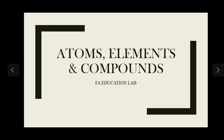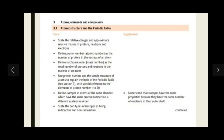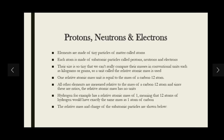Here is the CIE IGCSE Chemistry syllabus. We are going to discuss the first three concepts: we will state the relative charges and approximate relative masses of protons, neutrons, and electrons; define the proton number or atomic number as the number of protons in the nucleus of an atom; and define the nuclear number or mass number in terms of the total number of protons and neutrons in the nucleus.